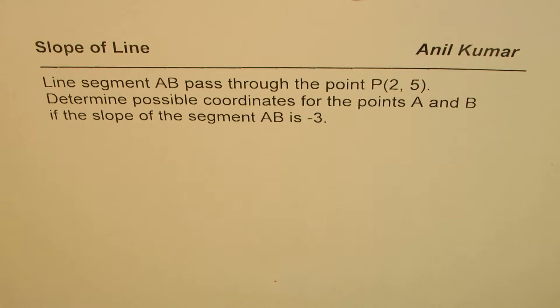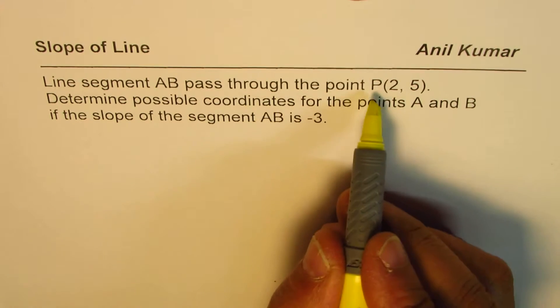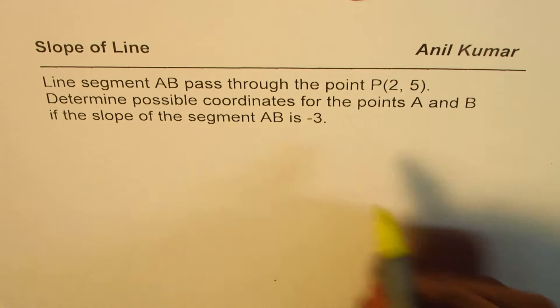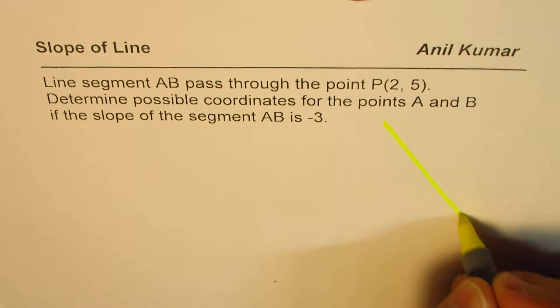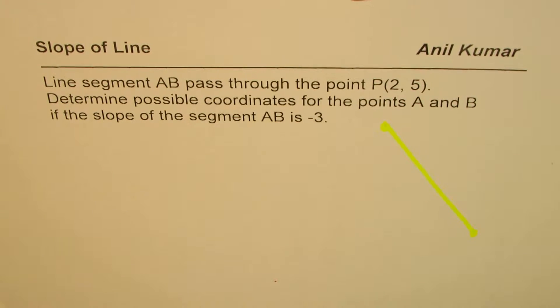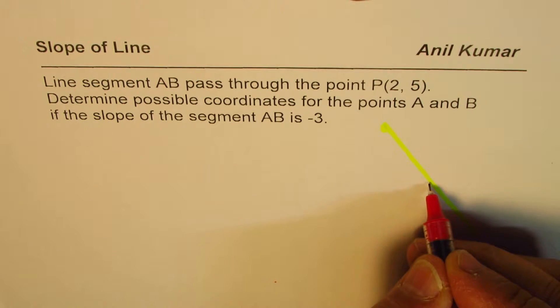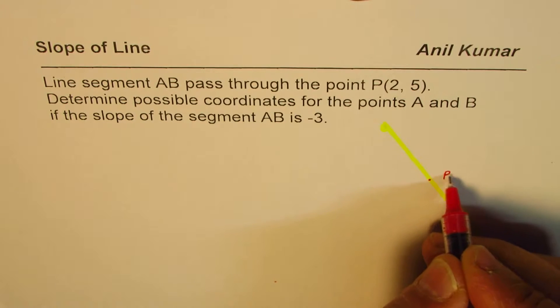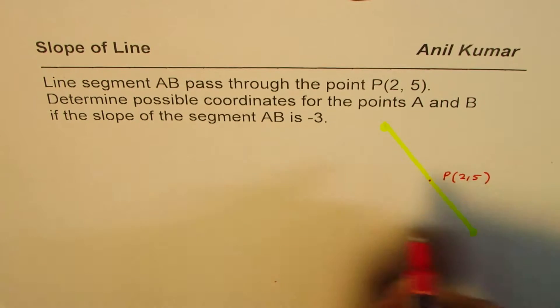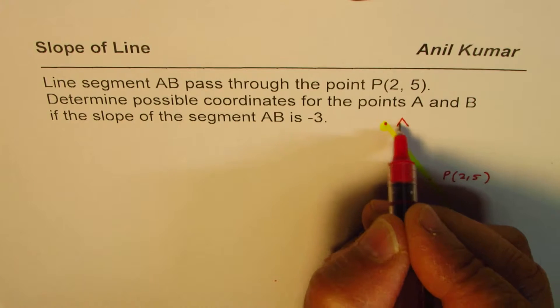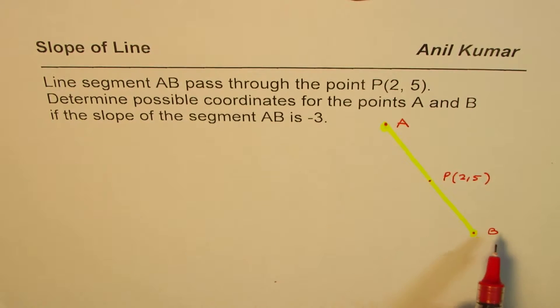Now, in this case, what is given to us is that there is a line AB which passes through a point and the slope is -3. That means it is dropping down. So we'll take a line which is dropping down. Let's say this is the line for us. And on this line, we are given a point. Let's say this point P is (2, 5). We need to find two points, A and B, so that the slope is -3.